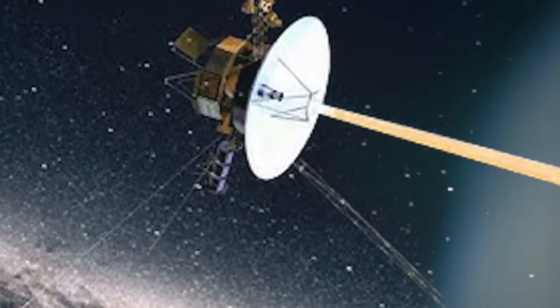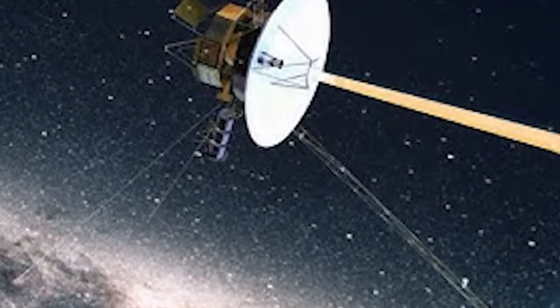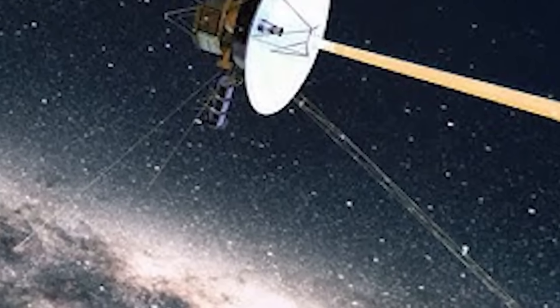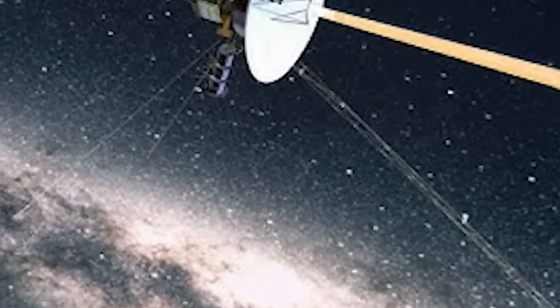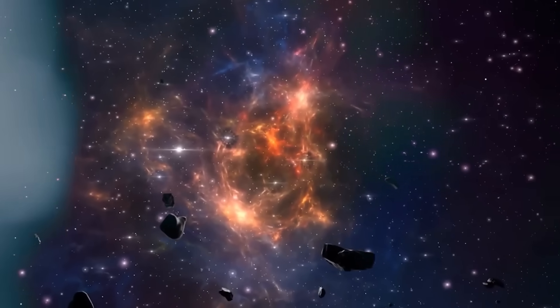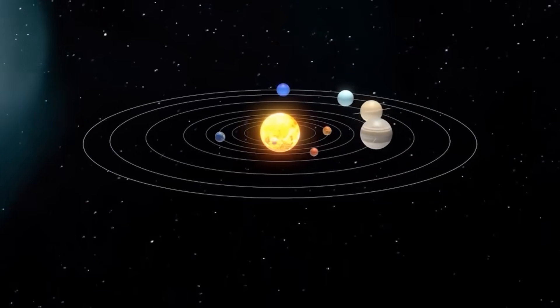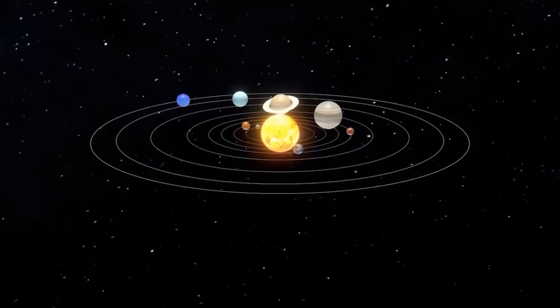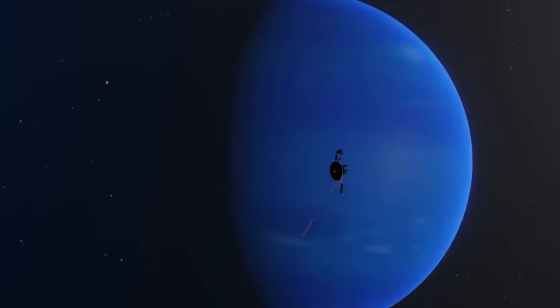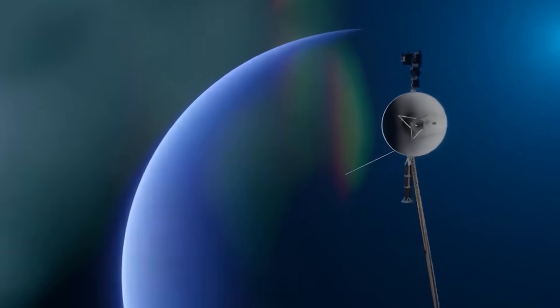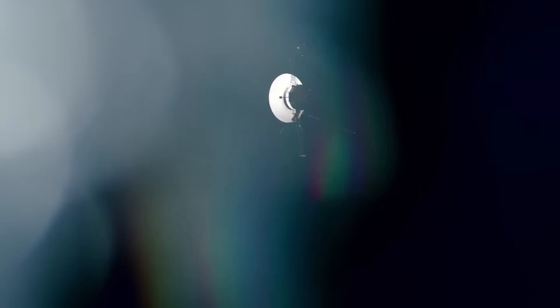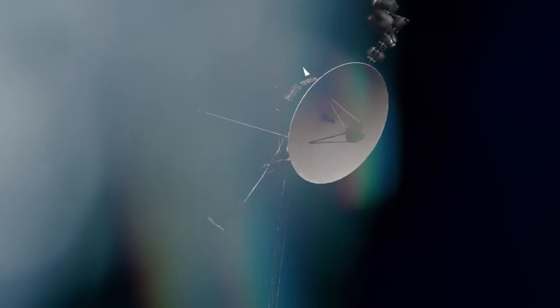Attached to Voyager 2 is a message, a golden disk etched with humanity's greetings, sounds, music, and diagrams. A beautiful attempt at interstellar diplomacy. But within that disk are detailed instructions, how to locate Earth, how to read the disk, how to understand who we are. For decades, this was celebrated as a symbol of hope. But in light of Voyager 2's discoveries, some now see it differently.